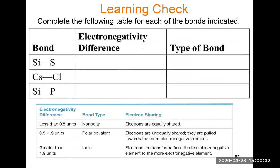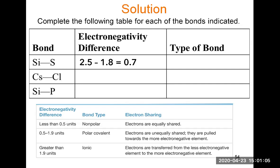Let's practice classifying bonds as polar or non-polar by calculating the electronegativity difference. Starting with silicon and sulfur: silicon has an electronegativity of 1.8 and sulfur is 2.5. Taking the larger minus the smaller, 2.5 minus 1.8 gives a difference of 0.7. According to the classification table, a difference of 0.7 is a polar covalent bond.